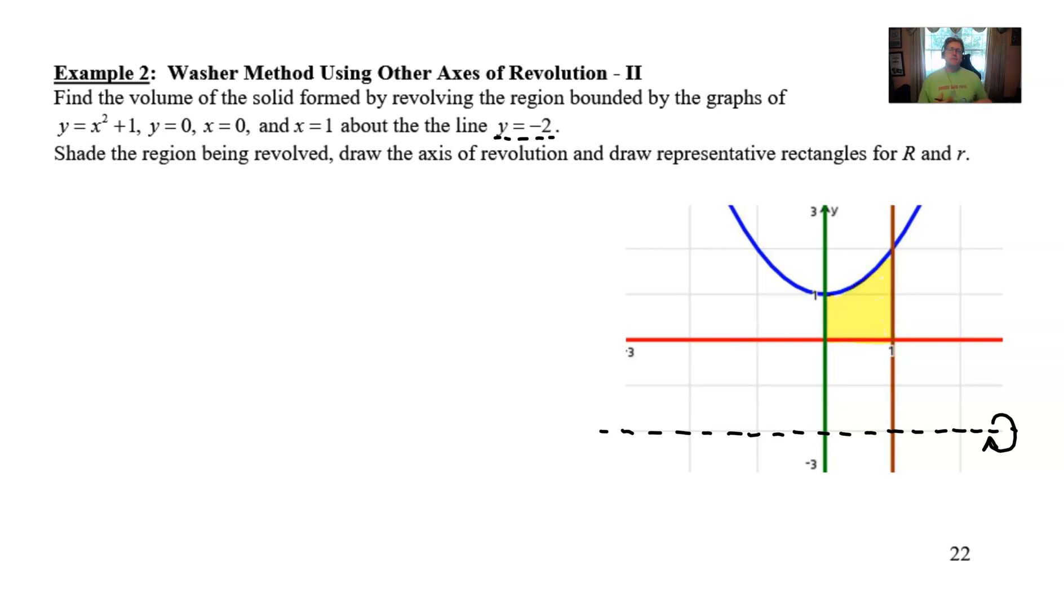And then our shaded region that we're revolving is this piece once again. Now to be very effective with this, what you want to do is start establishing some very consistent approaches. And what I like to recommend is to draw in those representative rectangles. The representative rectangles that you draw for washer method always start at the axis of revolution, and then the first one goes up to the farthest boundary of your shaded region, which in this case would be the parabola or the blue graph. And as we have said before, that is your capital R, your large radius. We do the same thing with the lower radius. The smaller radius emanate from the axis of revolution, but this time he would stop at the nearest boundary, which would be that x-axis in this case.